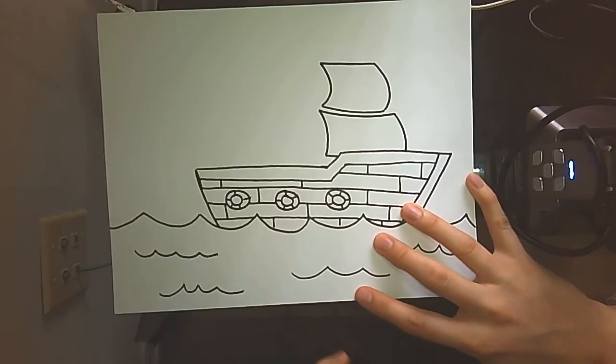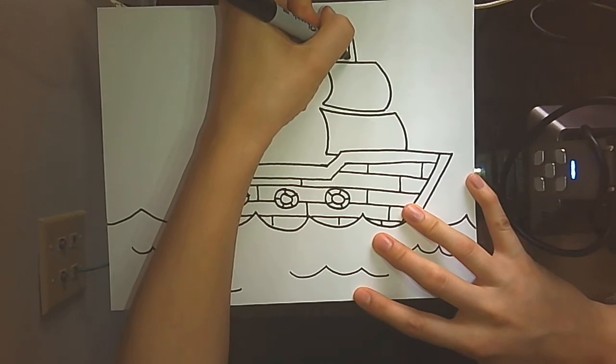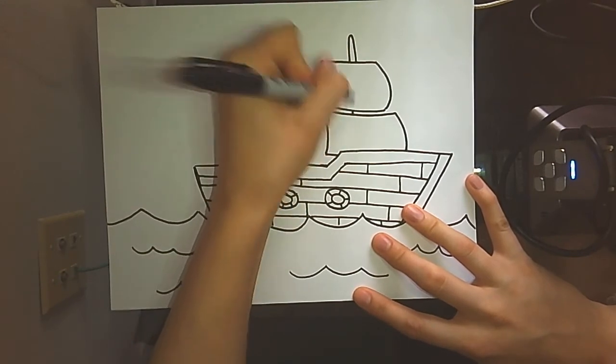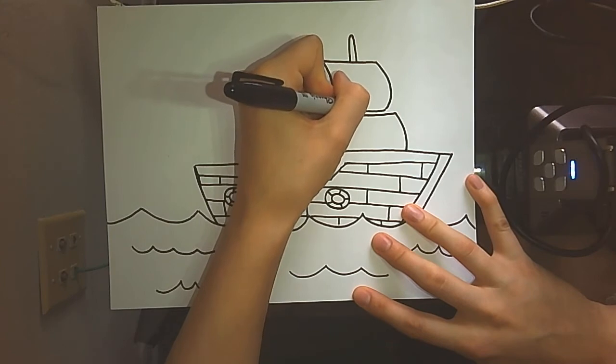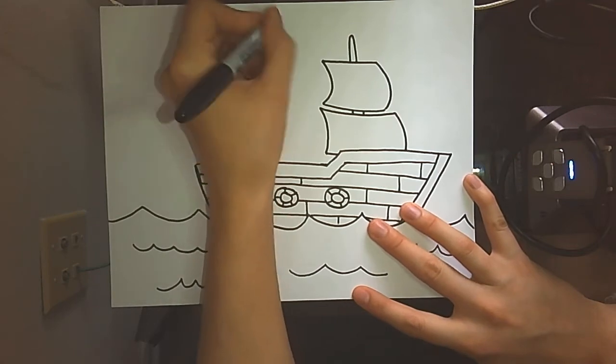But now it looks like our sails are just floating so we need to add the post. You could add a crow's nest on top. That's how they see things. They have somebody watch. Okay so there's one of my sails, so now I'm gonna add another one. This is the biggest one. This is the main sail.